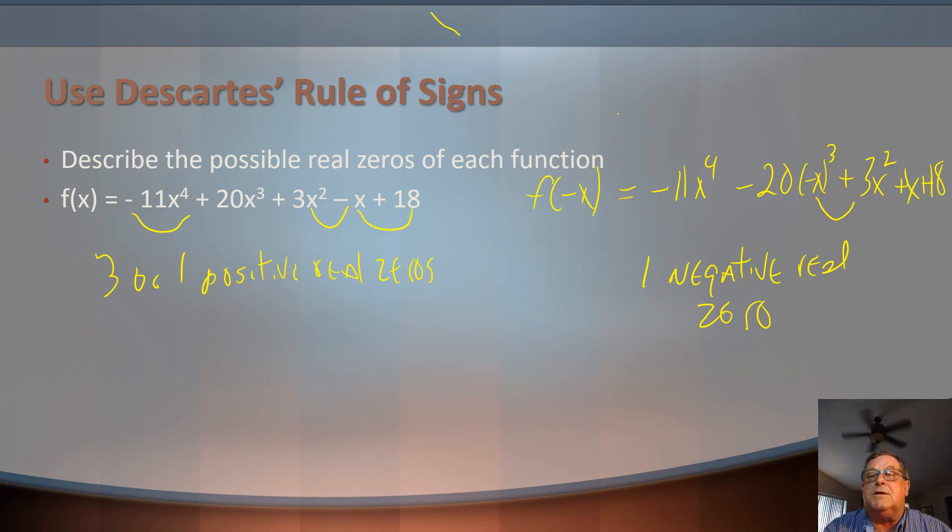We're looking at the sign changes. Any sign changes that we have can tell us how many positive real zeros. We take that number. If we can reduce that by two, then we've got either one.